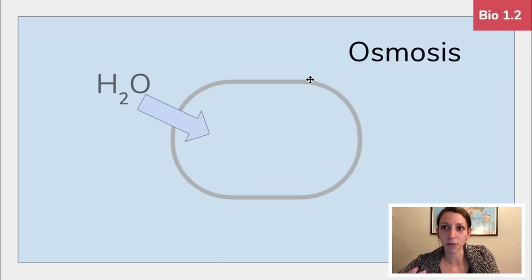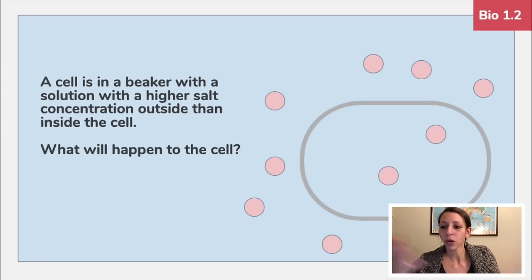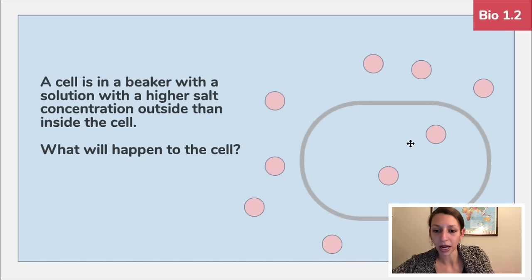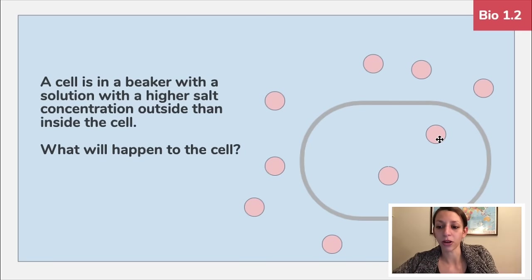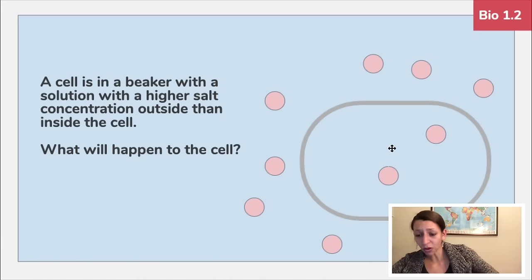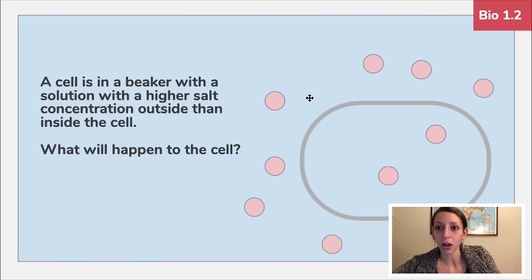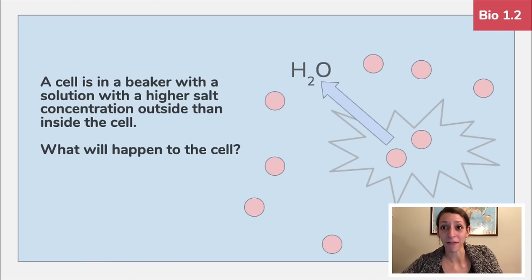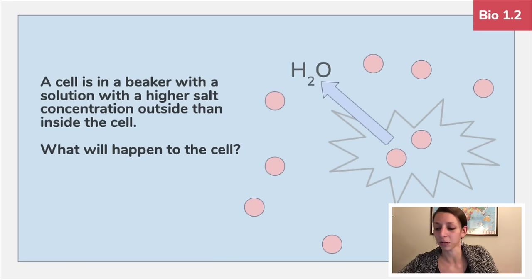Osmosis is the transport of water molecules across a membrane from high to low concentration, and it's important for homeostasis. For example, if a cell is placed in a solution with a higher salt concentration outside the cell, the concentration of water is higher inside the cell. Water will move out of the cell via osmosis, and the cell may eventually shrink and shrivel. Check out the cell transport video for more examples of these types of questions.